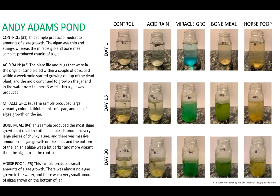These are the results for the Andy Adams Pond sample. You can see here the control produced light-streaming algae, the fertilizers produced large chunks of algae, and the acid rain produced mold instead of algae, and it actually killed the small piece of algae that was in it to start with.